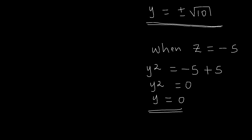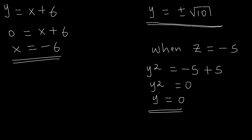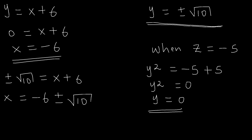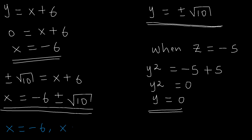Now let's find the values of x. If you remember, at the beginning we had set y to be equal to x plus 6. So when y equals 0, we have 0 equals x plus 6, and so x equals minus 6. And for plus or minus the square root of 10, we have x plus 6 equals plus or minus the square root of 10, so x equals minus 6 plus or minus the square root of 10.